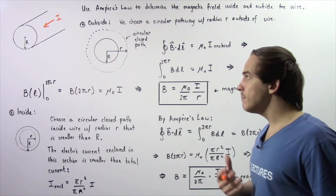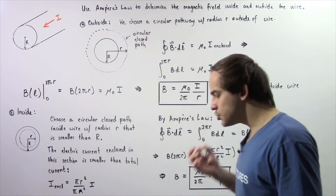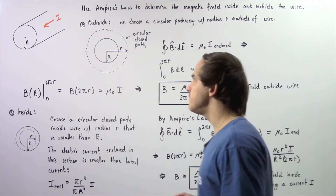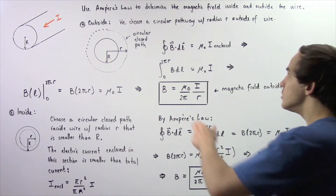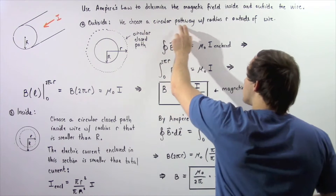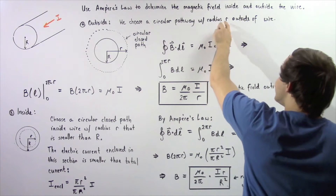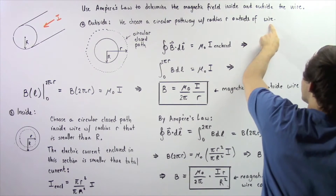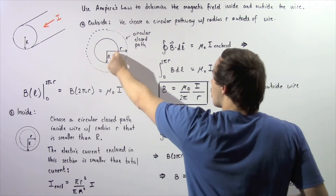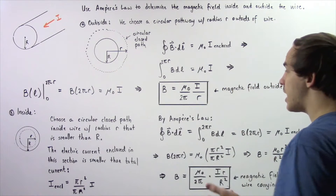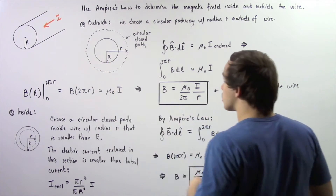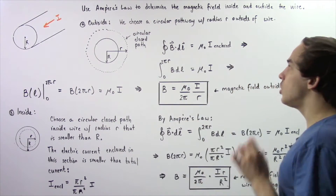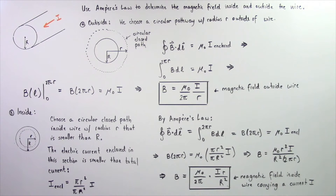To use Ampere's law we have to choose a symmetrical pathway outside of our conducting wire. We choose a circular pathway with radius given by lowercase r outside of the wire, where lowercase r is greater than uppercase R. This dashed line is our chosen closed circular pathway.